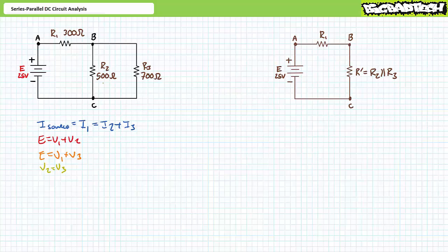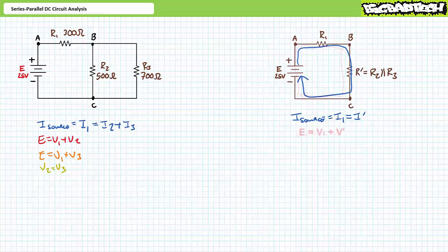Let's now take a close look at our pure series simplification. R1 is purely in series with R single prime — there is absolutely no need to simplify this any further. You will note this simplification still allows access to all the original nodes A, B, and C. Let's apply pure series properties: current through elements in series is the same, so I source equals I1, which equals I single prime. Kirchhoff's voltage law gives us E equals V1 plus V single prime. It's now a simple matter of performing a pure series circuit analysis of the simplified circuit and then mapping these properties back to our original series-parallel circuit.